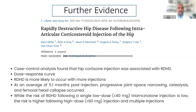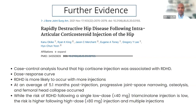A study published in the Journal of Bone and Joint Surgery in November 2021 titled 'Rapidly Destructive Hip Disease Following Intraarticular Corticosteroid Injection of the Hip' was a case-control analysis evaluating the association between corticosteroid injections and rapidly destructive hip disease. They found a dose-response curve where the risk increased with the number of injections and dose. At 5.1 months post-injection, there was progressive joint-space narrowing, osteolysis, and femoral head collapse. While the risk of a single low-dose injection is low, the risk is much higher following high-dose and repeated injections.